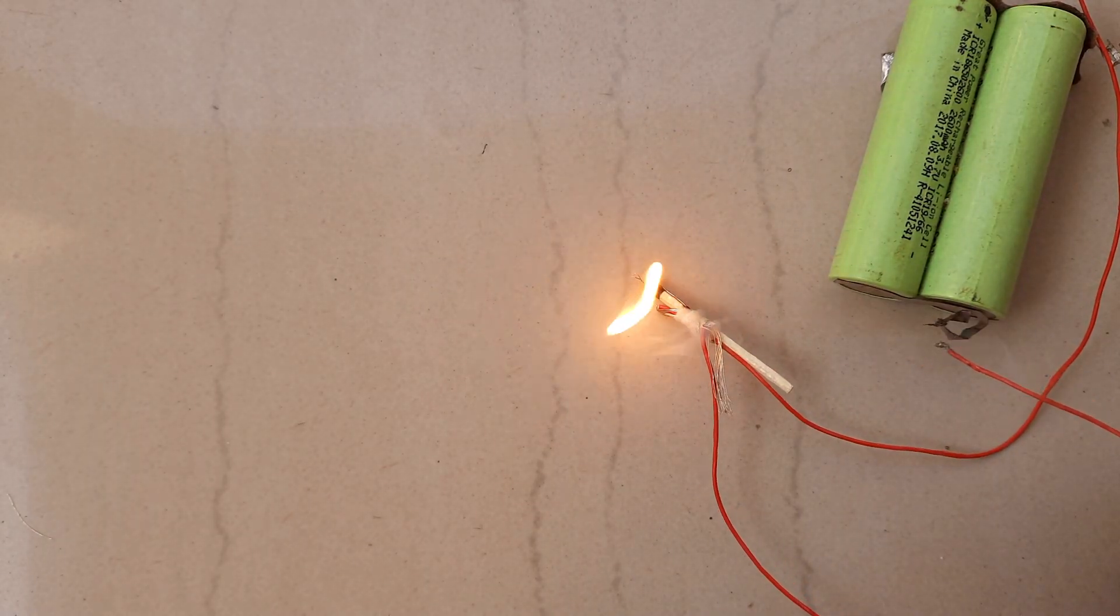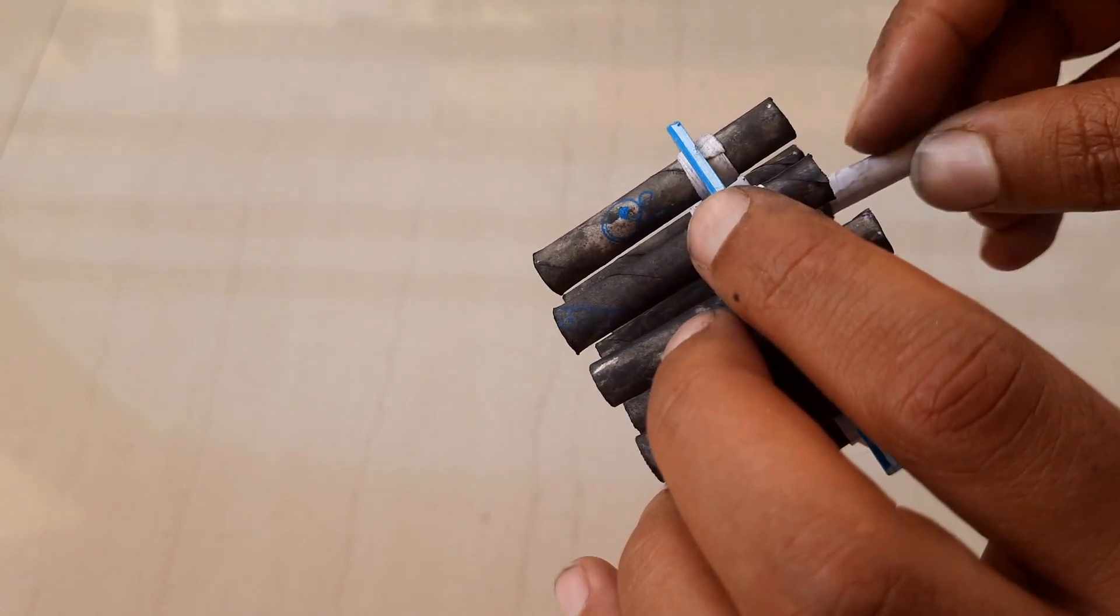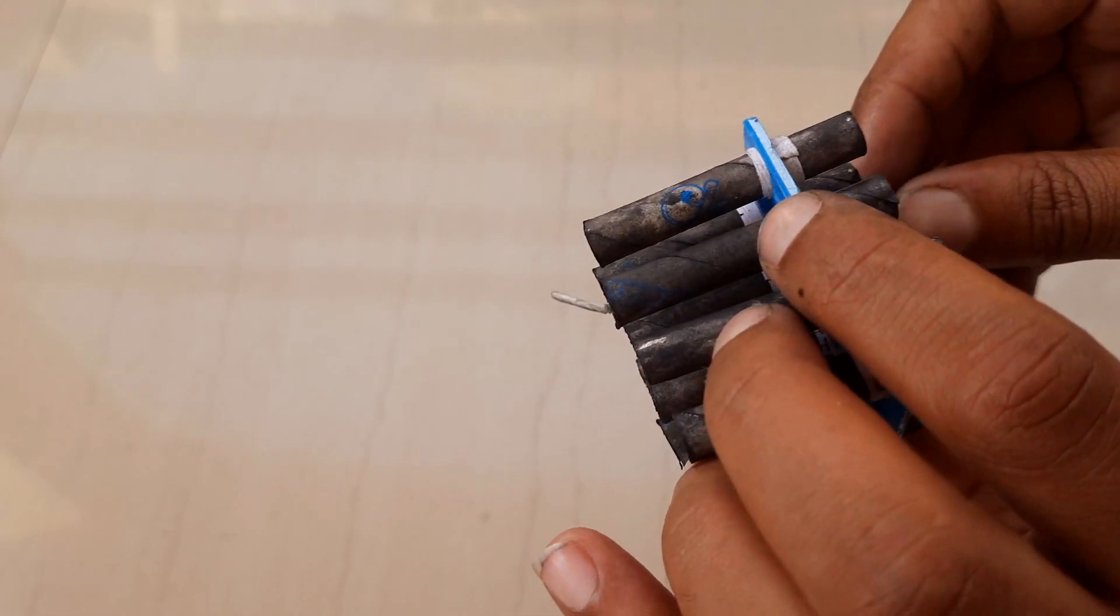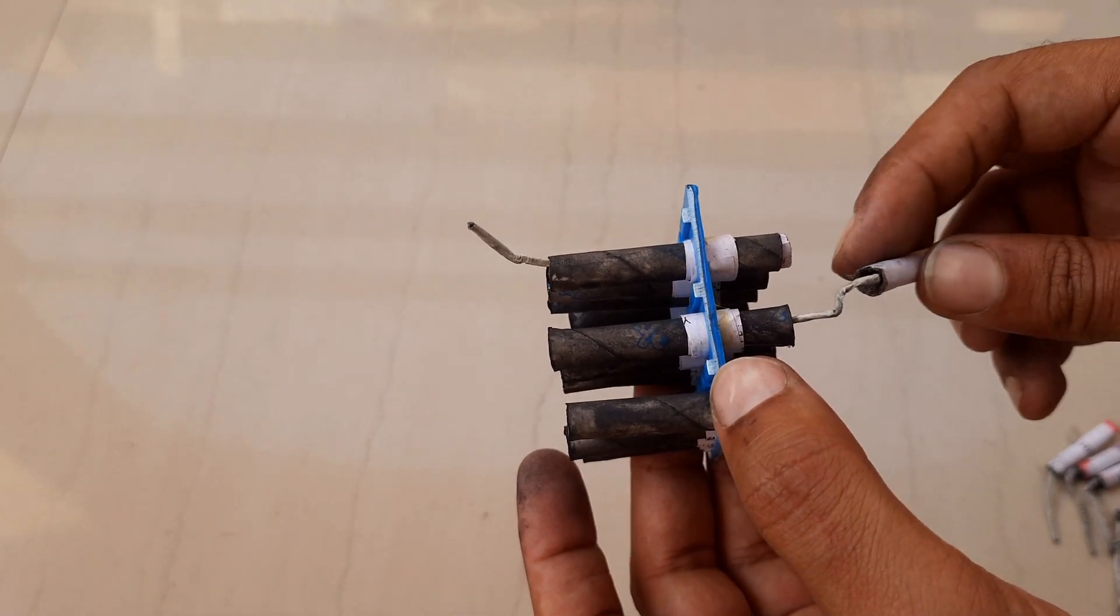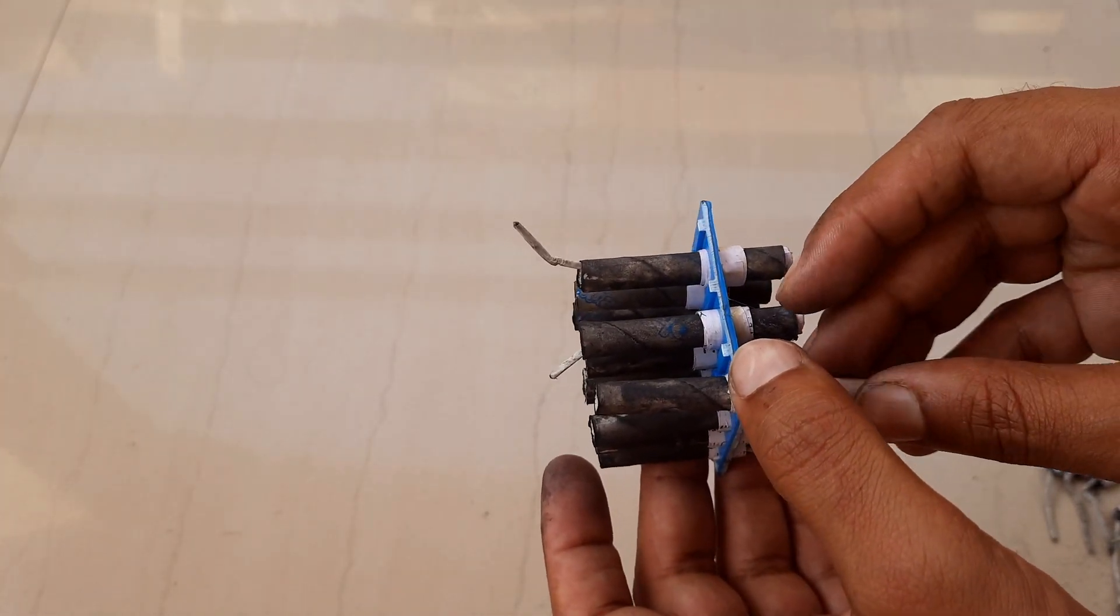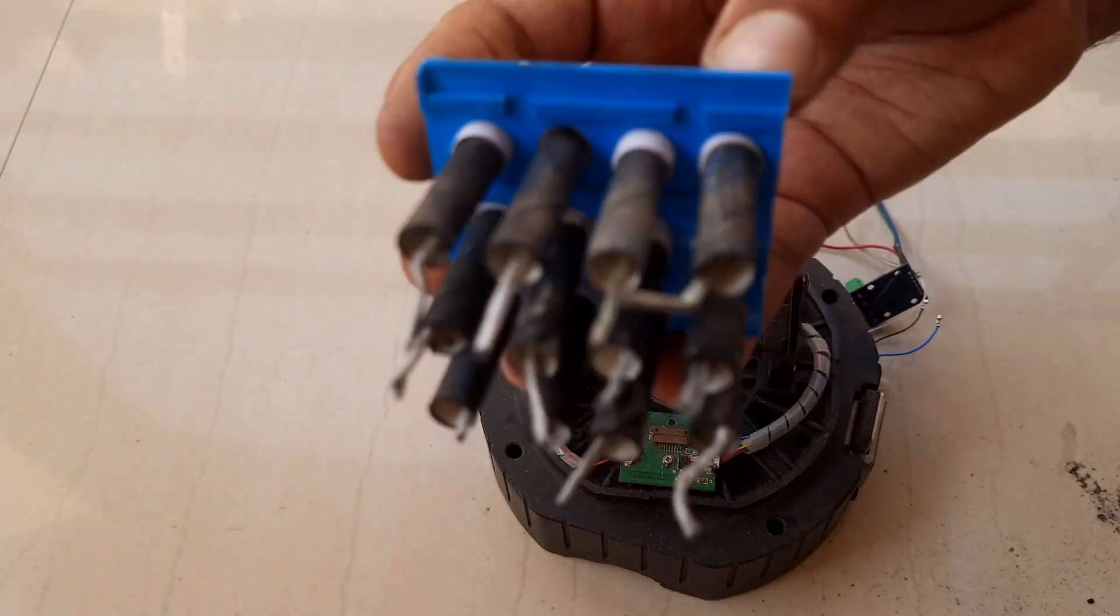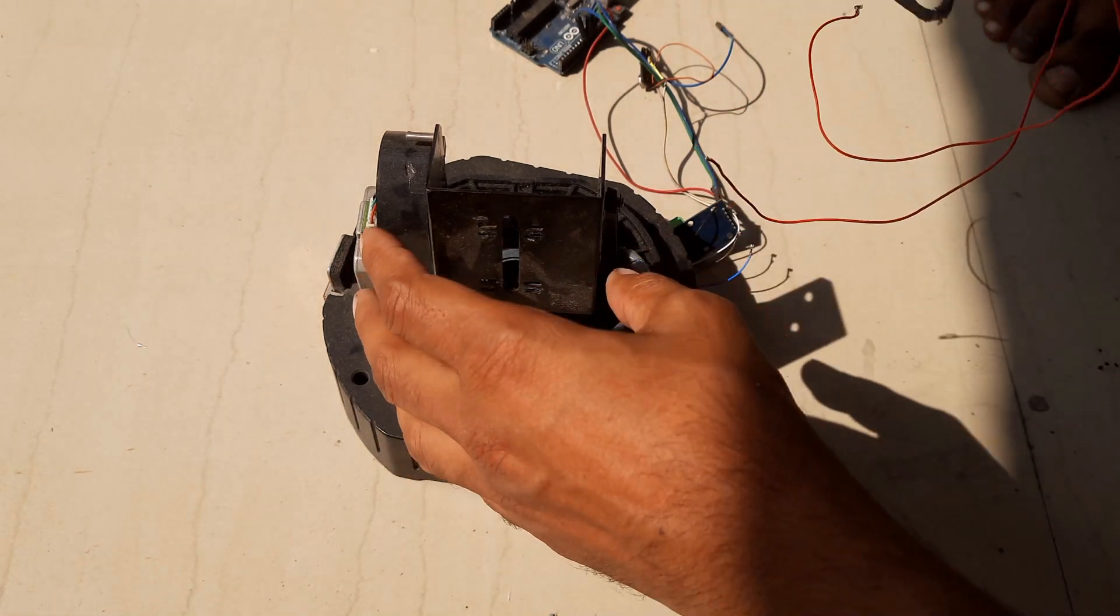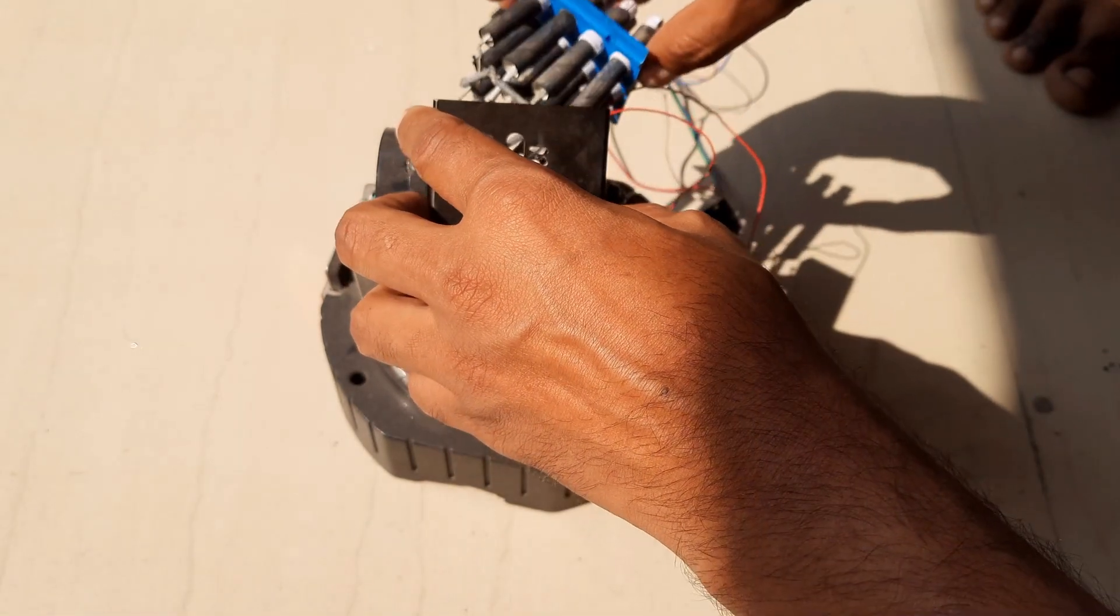So this is how it will ignite our rockets. Now I will place all the crackers I have modified so far. I have connected the igniter with the cracker's fuse.